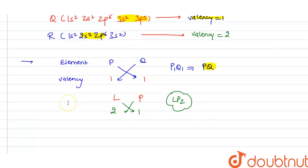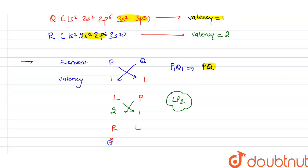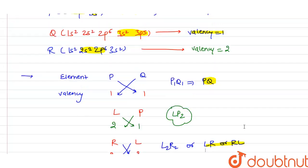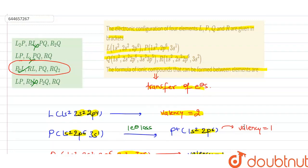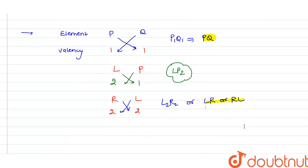For the compound formed between R and L: the valency of R is 2 and the valency of L is 2. On cross-multiplication we get R2L2, which simplifies to RL or you can write it as RL.